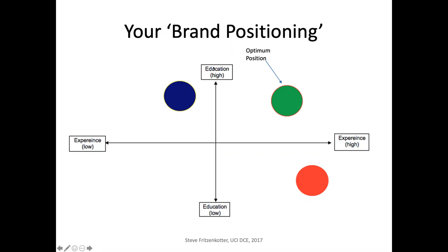So if you're high up this scale, in this case it's dealing with high education and high experience — that's where you want to be. High experience but low education means you need to fix that; low education and high experience means you need to get more education. This is dealing with people, but I'm going to ask you to build maps for your business.